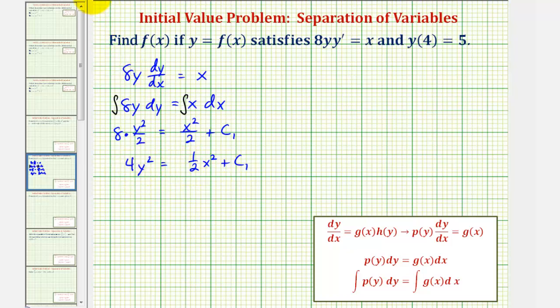Now let's go ahead and solve this for y squared by multiplying both sides of the equation by 1/4. So we'd have y squared equals, we have 1/8 x to the second plus 1/4 times c sub 1. Let's let c equal 1/4 times c sub 1, so we can just write plus c.